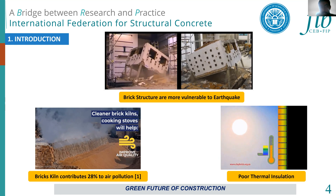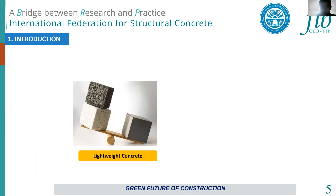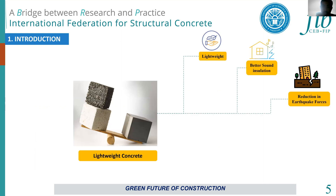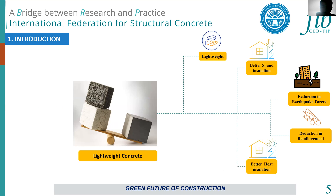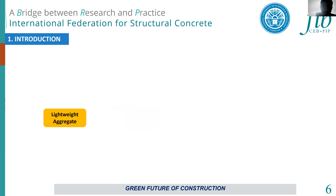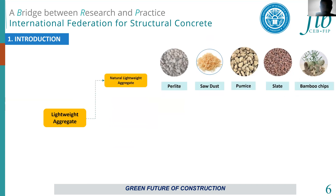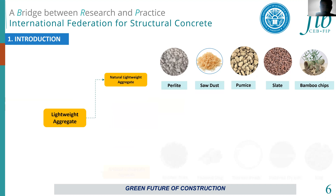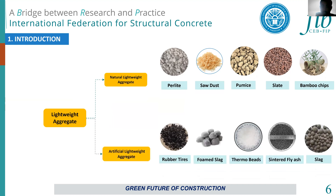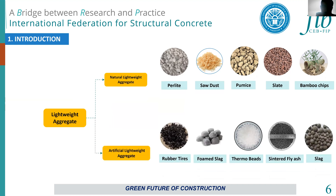After these drawbacks, researchers developed lightweight concrete because of its numerous benefits: it is lightweight, provides better sound insulation, reduces earthquake forces, reduces reinforcement requirements, offers better heat insulation, and is cost-effective. Different types of lightweight aggregates — natural and artificial — are used in production, including perlite, rubber tires, and foam.